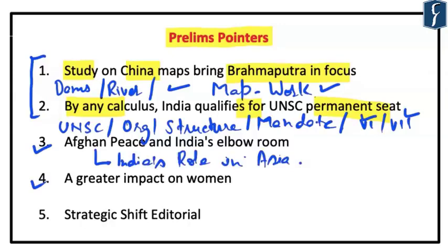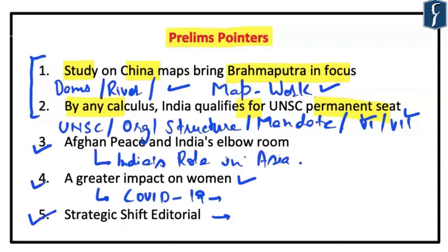Article three talks about India's position or role in South Asia and also in the context of India-Afghanistan relations. Topic 4 — a greater impact of COVID-19 — talks about the impact on various groups, with the focus on women. There is also an editorial about a strategic shift, but since this topic has been discussed many times before, it can be reviewed through the editorial without new discussion here.